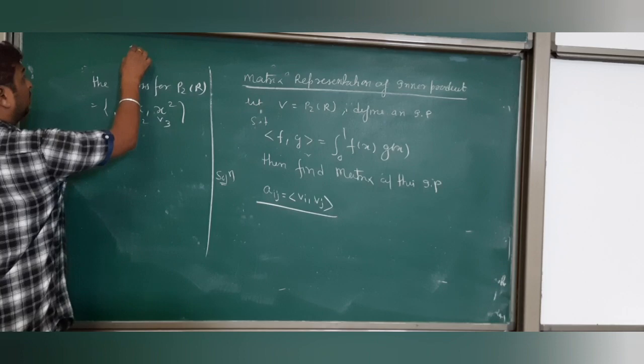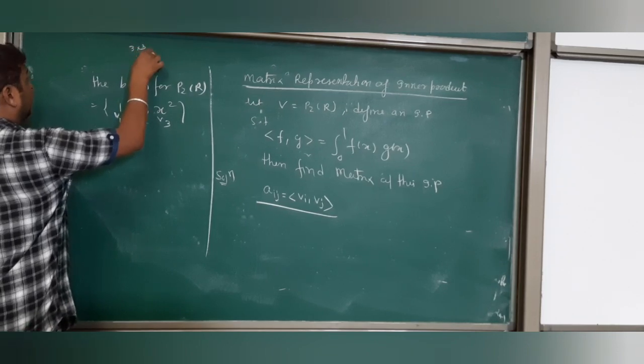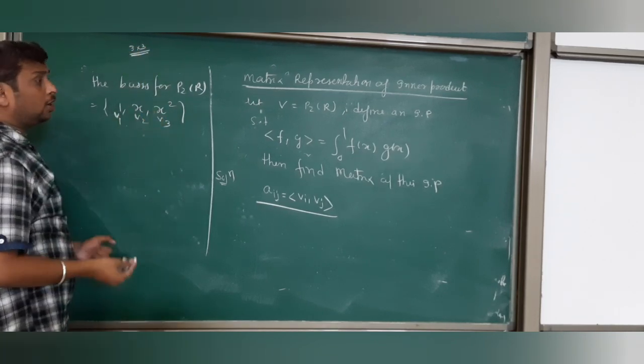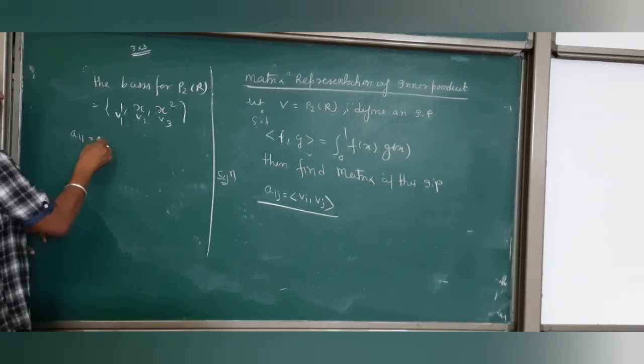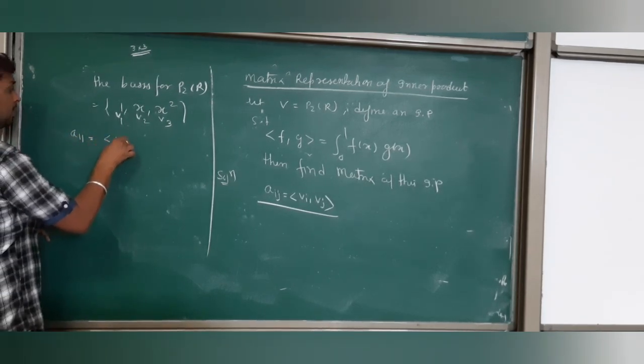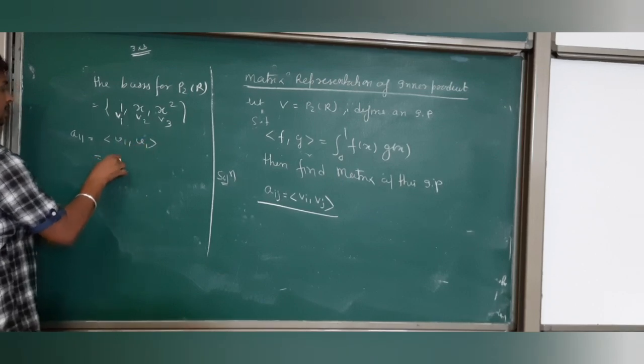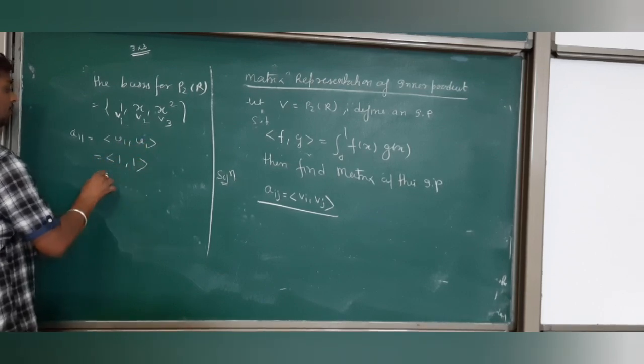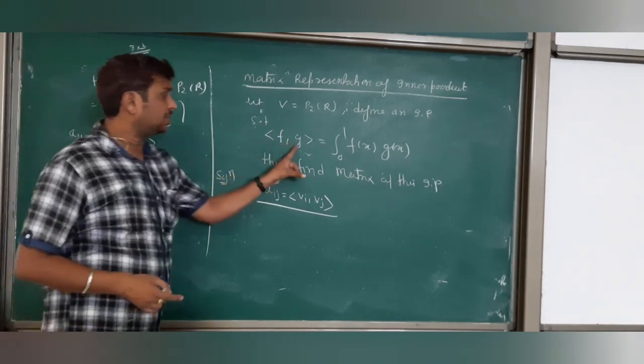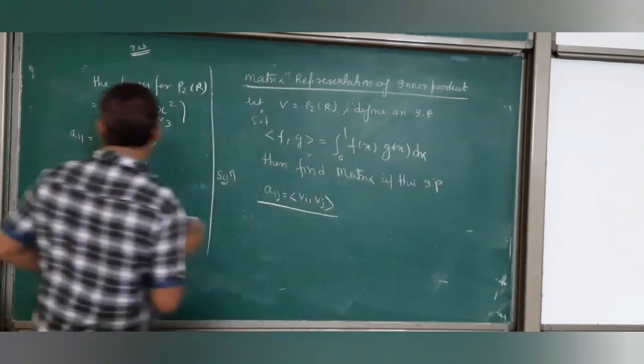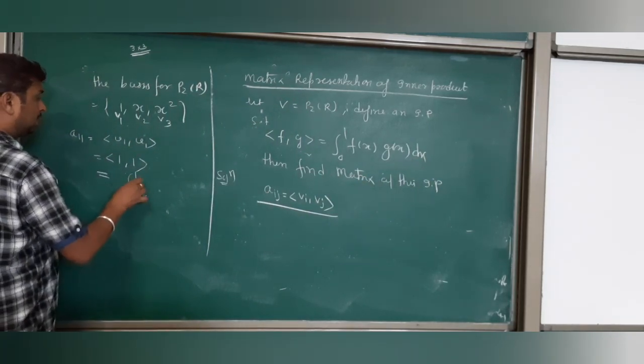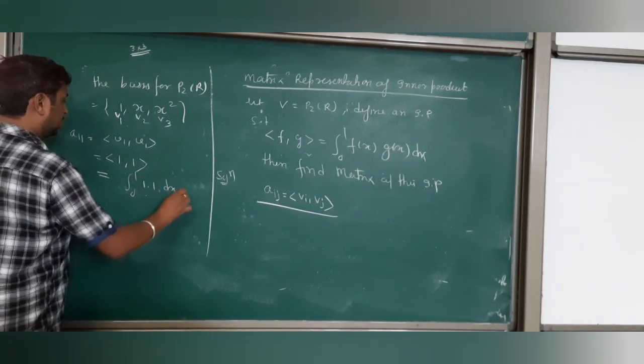So you know v₁=1, v₂=x, v₃=x². The matrix will be 3×3 symmetric. We calculate all nine elements. First element: a₁₁ is inner product v₁ with v₁, which is 1 with 1. From our definition, it's integral 0 to 1 of 1×1 dx, which equals 1. What is a₁₂? Inner product v₁, v₂ equals integral 0 to 1 of x dx, which equals 1/2.